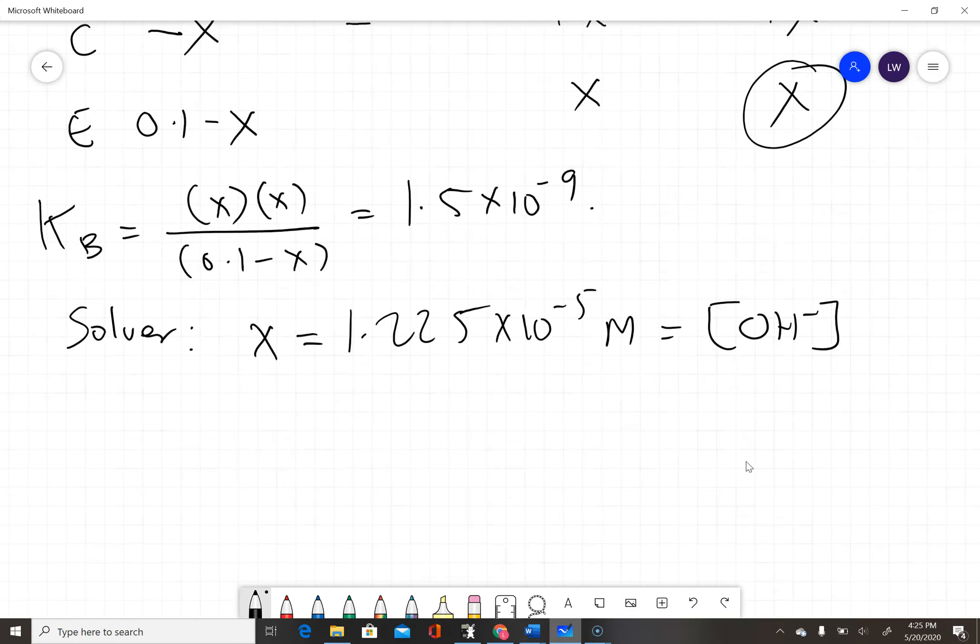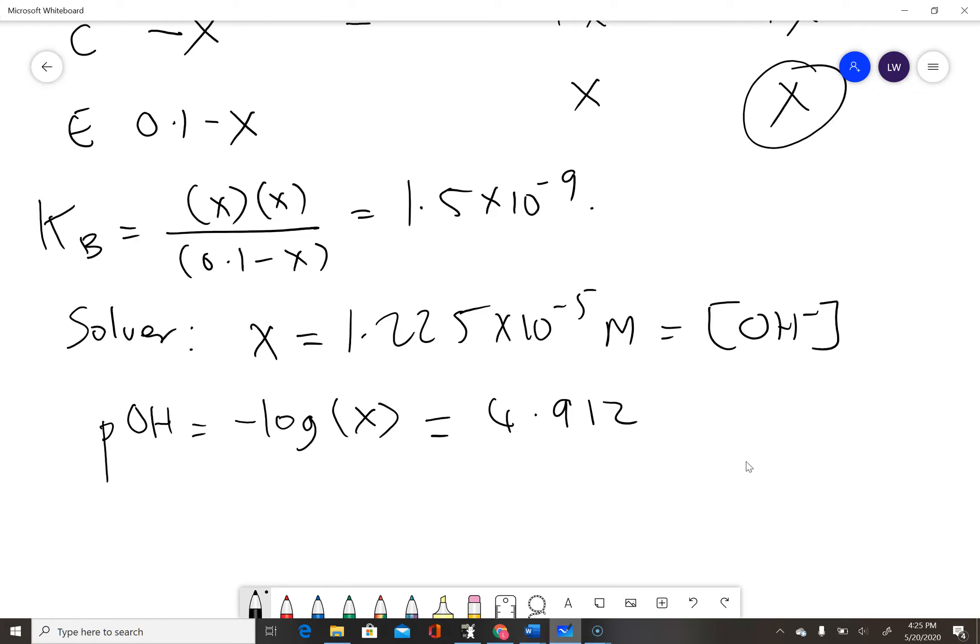Now I can calculate my pOH. pOH is the negative log of the hydroxide ion concentration, which is x. I'll do negative log of x in my calculator, which gives a pOH of 4.912.